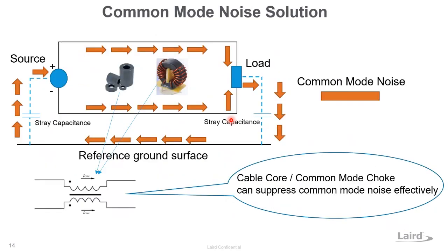For common mode, shown in orange, we use a cable core or common mode choke to suppress — either block or absorb — this type of common mode noise.